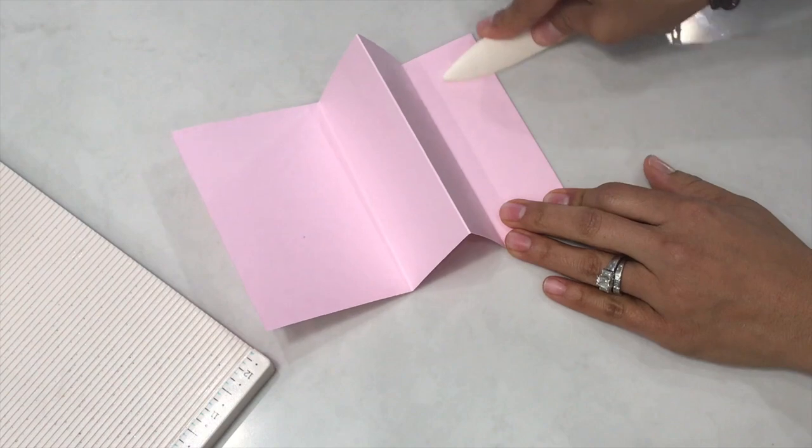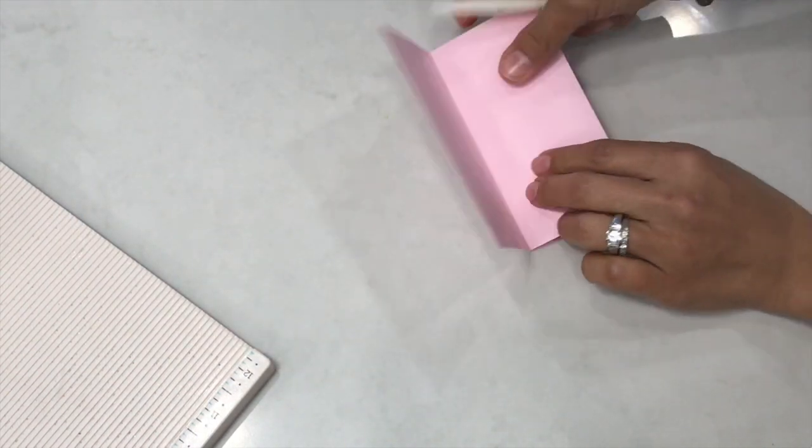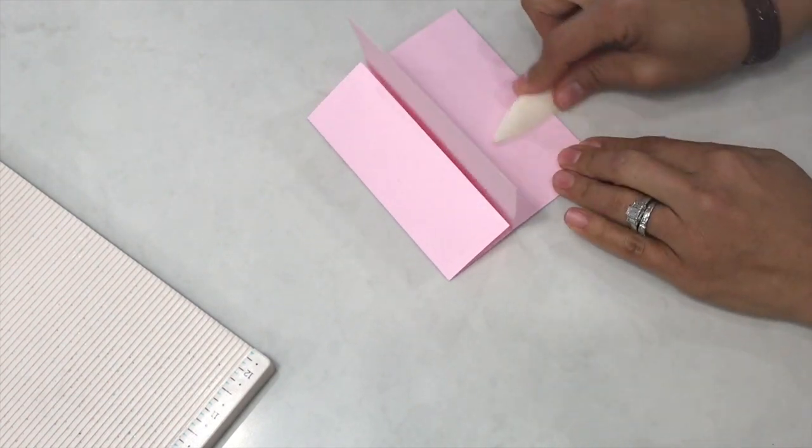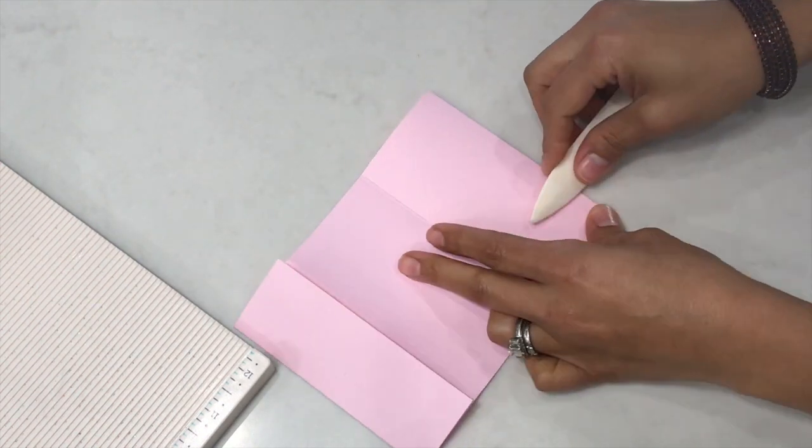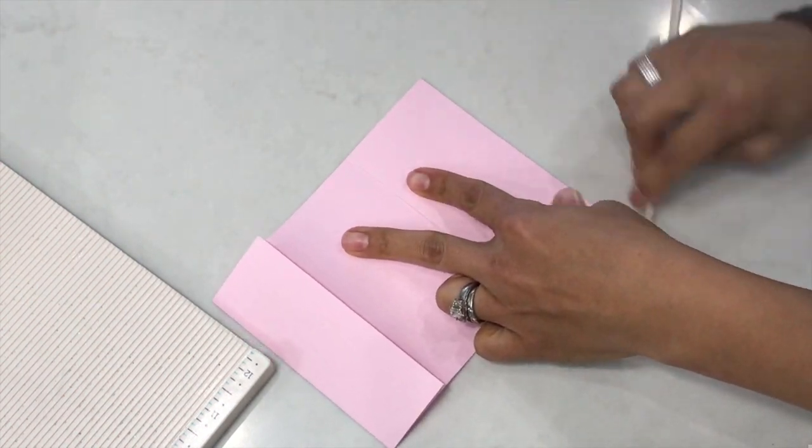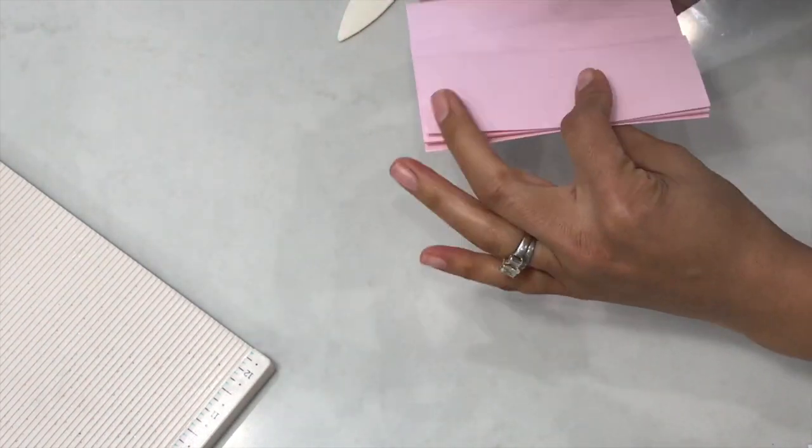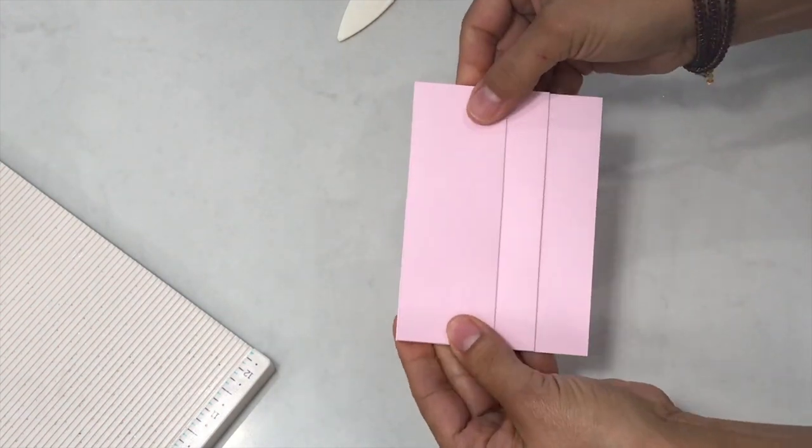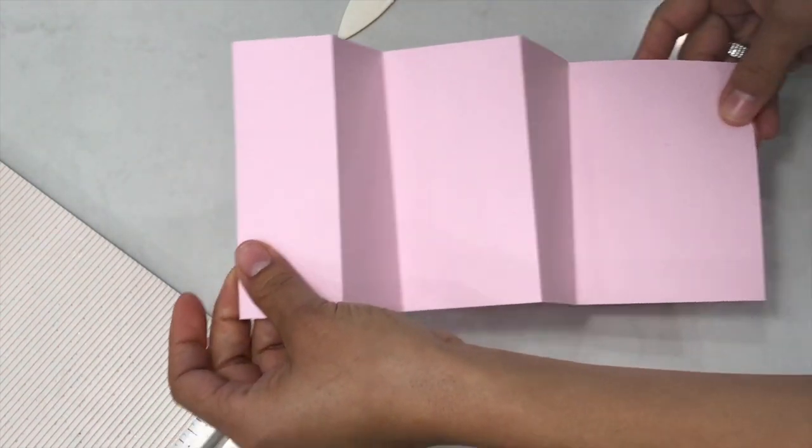You can go ahead and take your bone folder and crease it so that you get a nice crease in the fold. You should have something that looks like this: one, two, three panels, and it folds out like that.